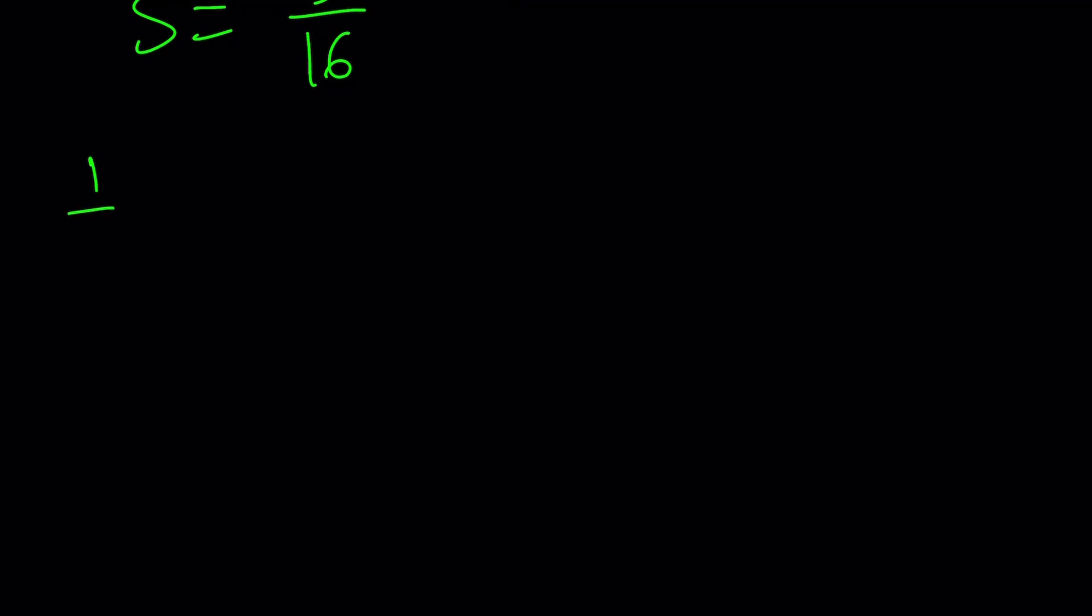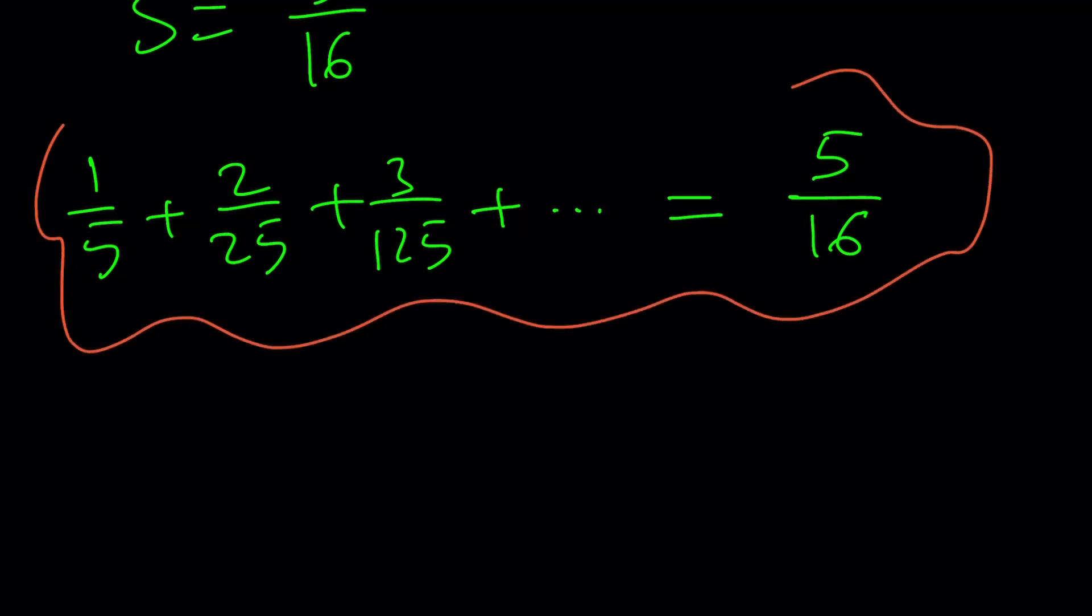Which means our original sum, 1 over 5 plus 2 over 25 plus 3 over 125, converges to 5 over 16. And this brings us to the end of this video.